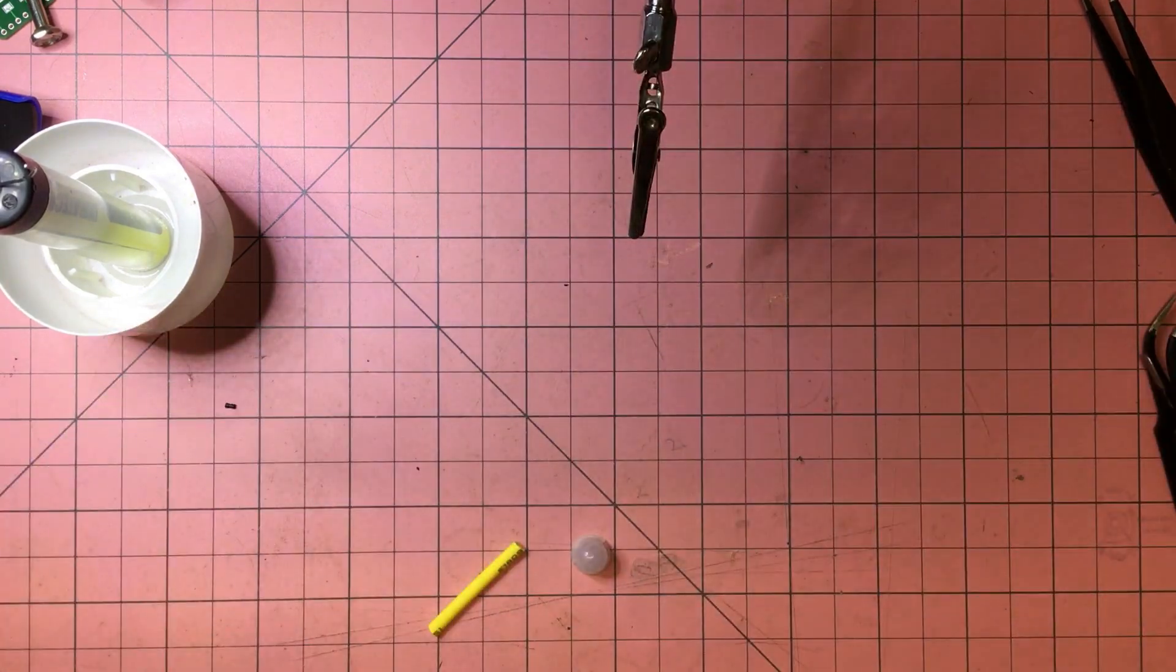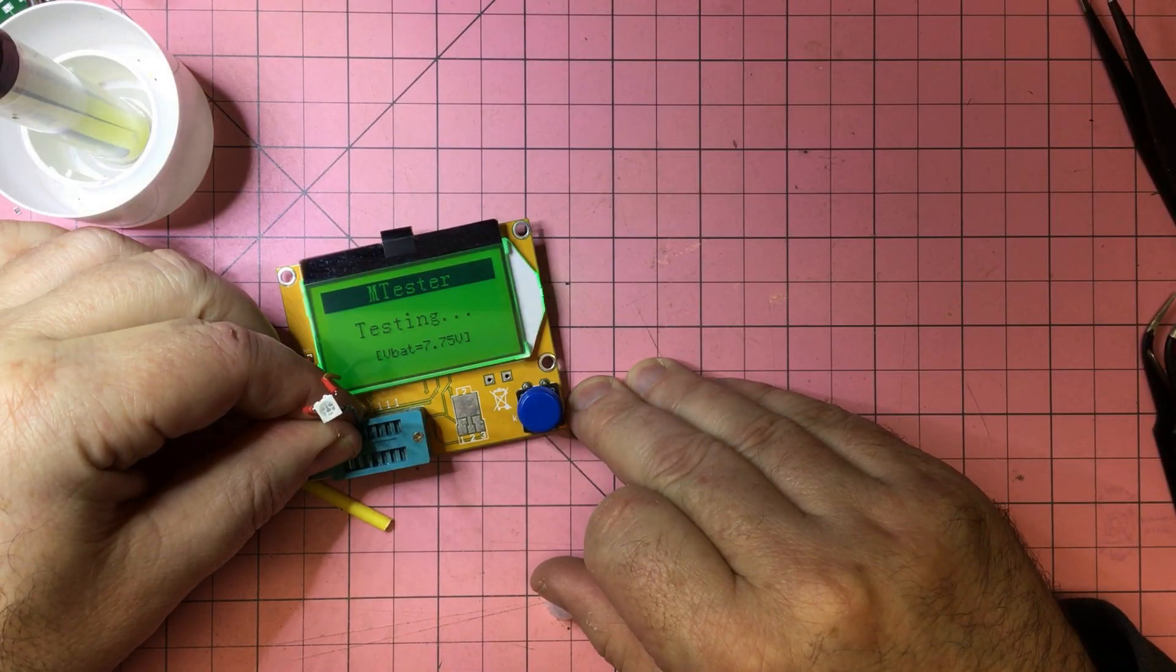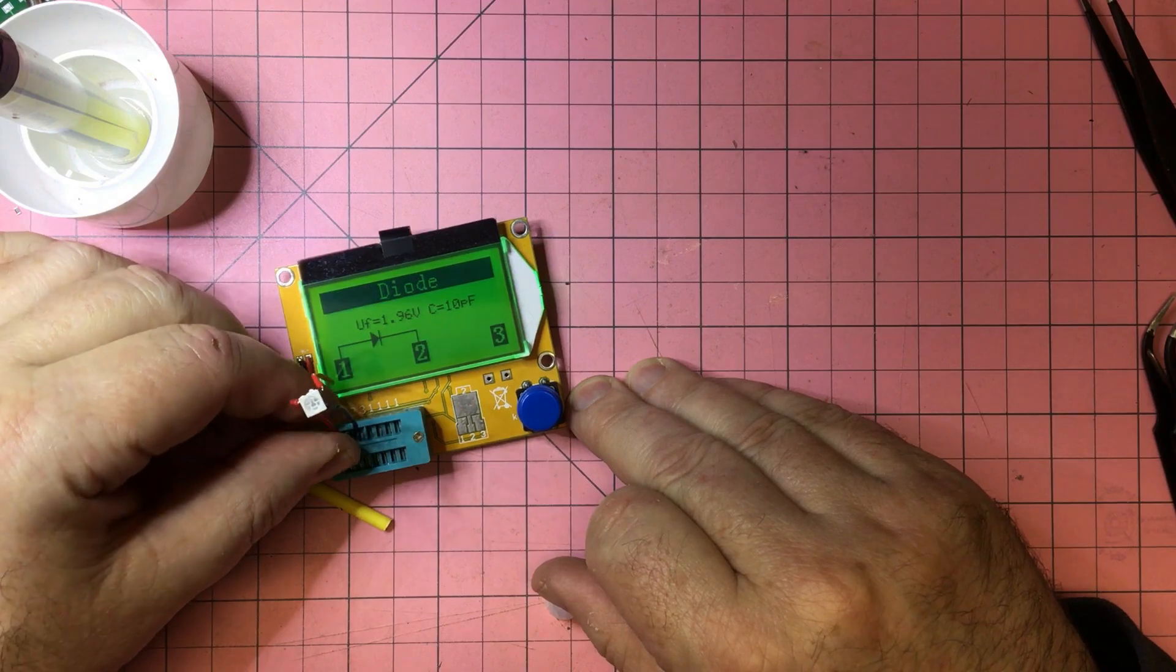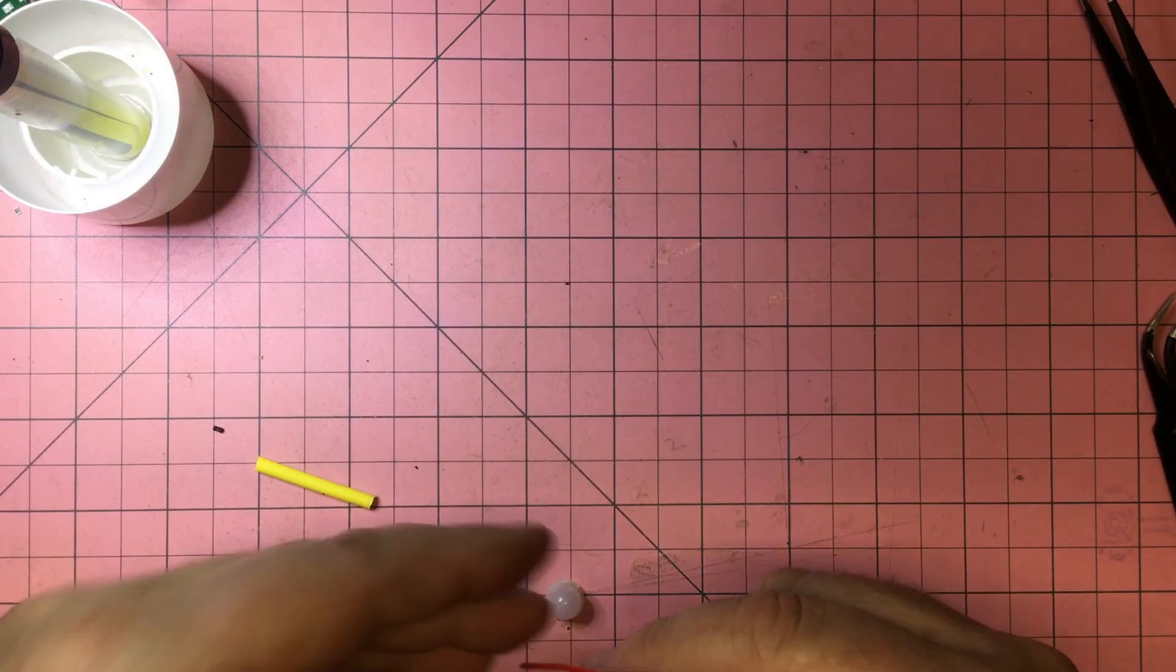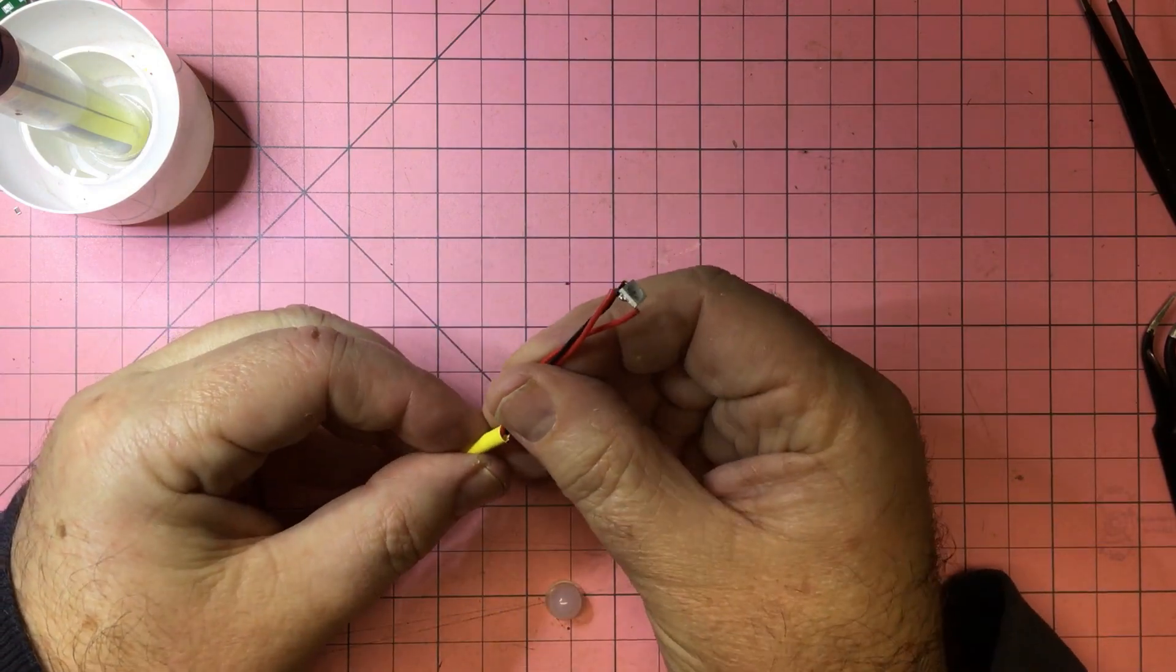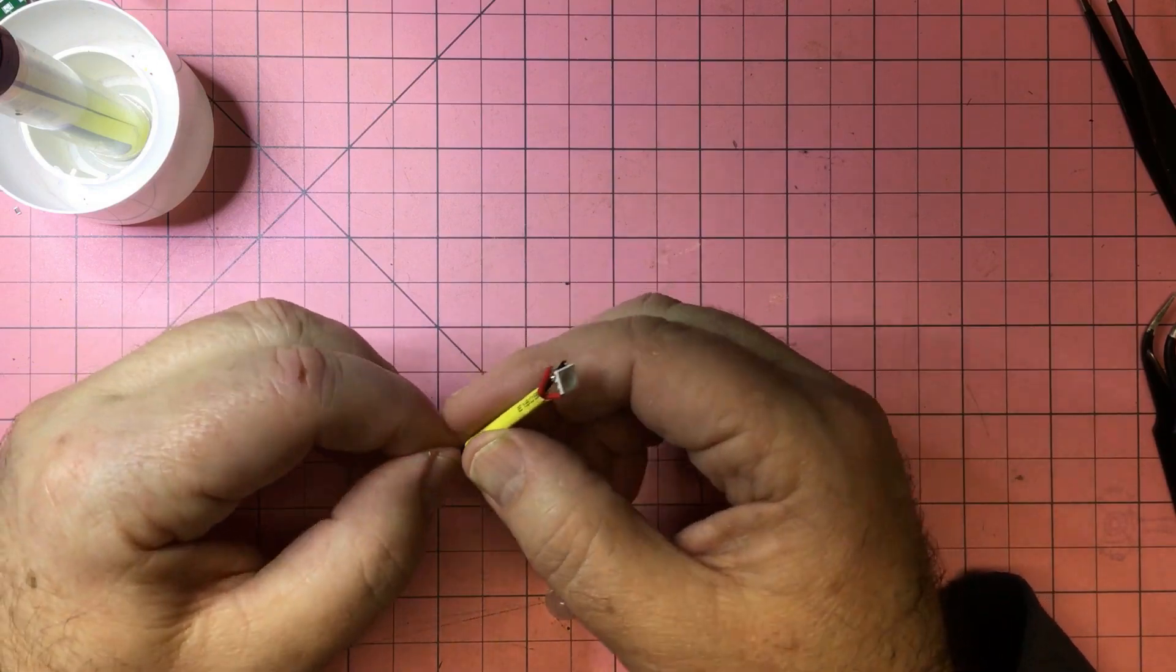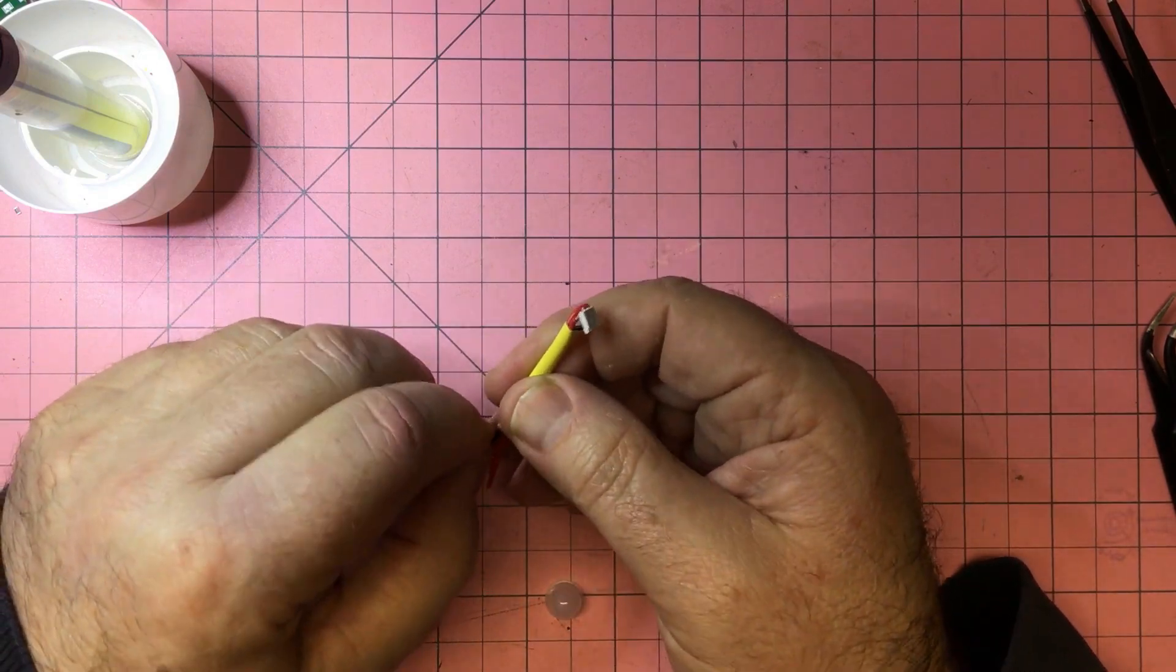Okay, so then what we need to do is just test it and make sure that all those connections are still good. Yep, no problem. And now I'm going to put a little bit of shrink wrap over the three leads and then just alter them so it's all a bit squared away.